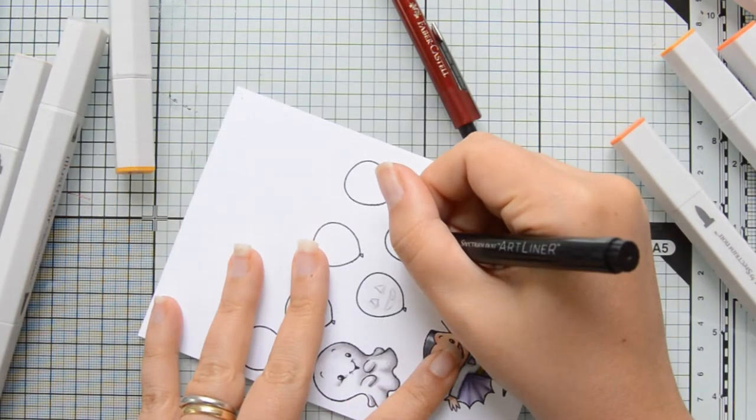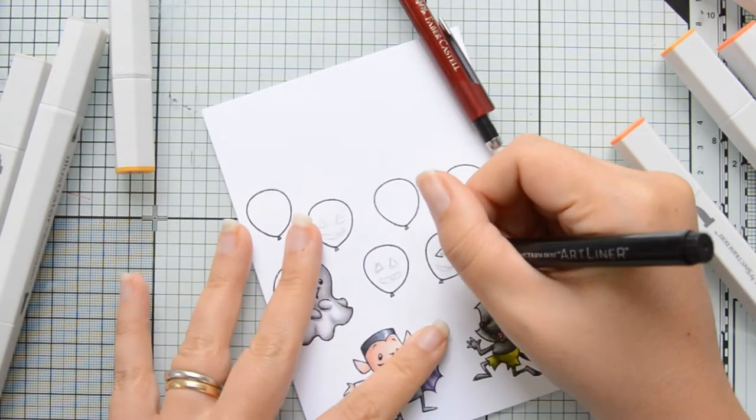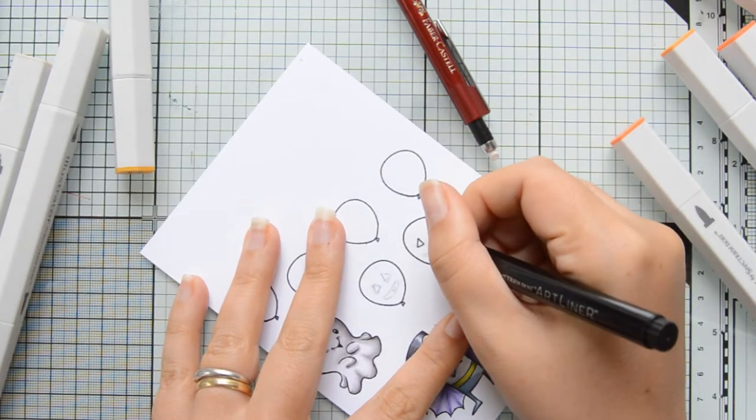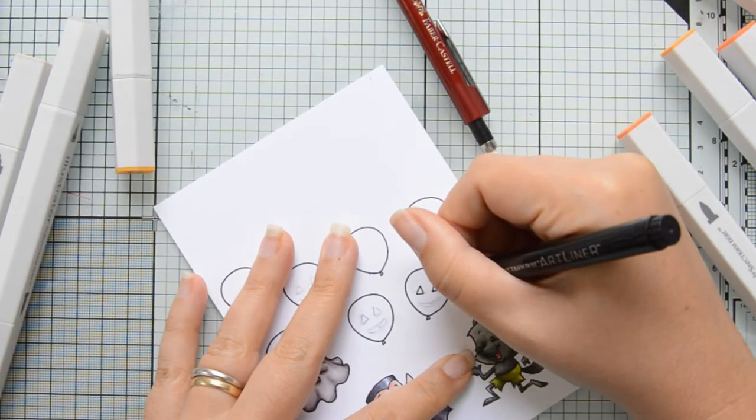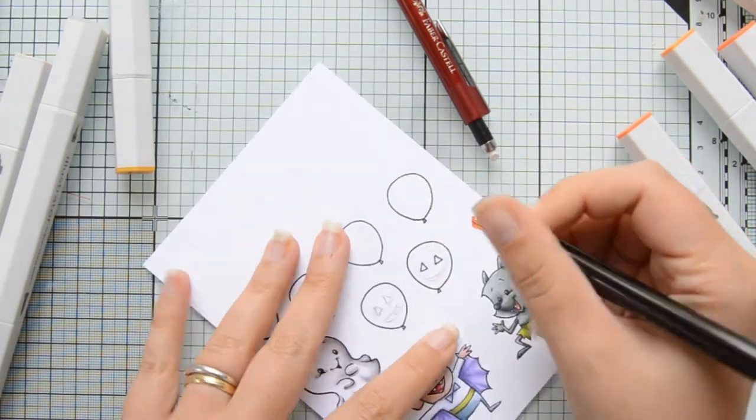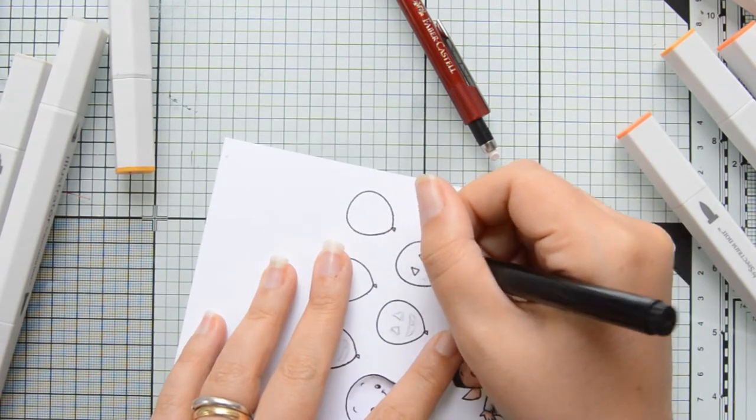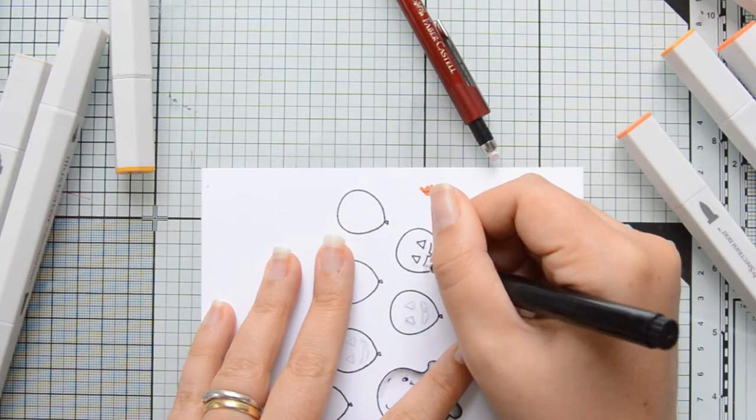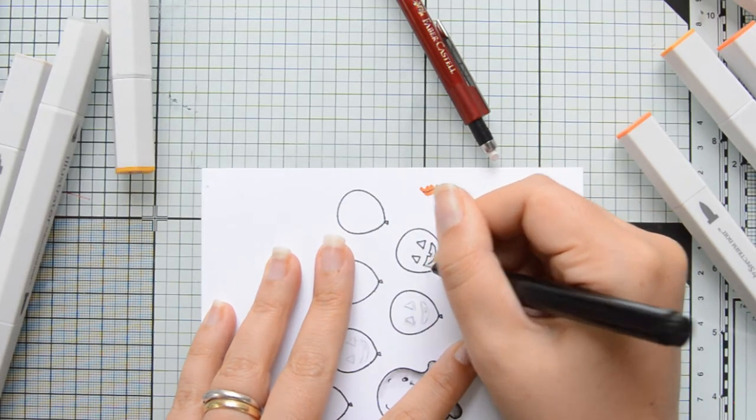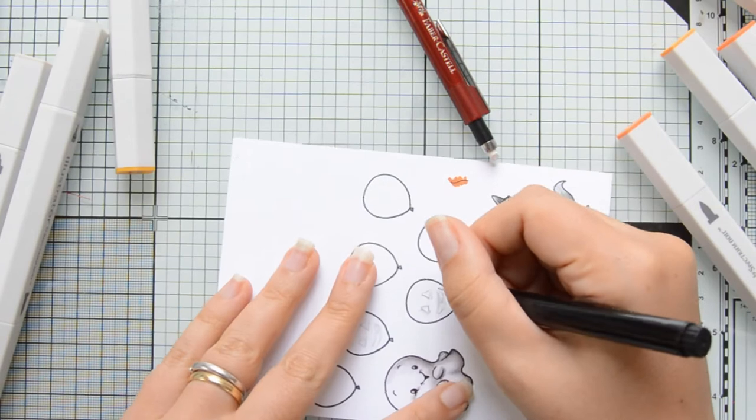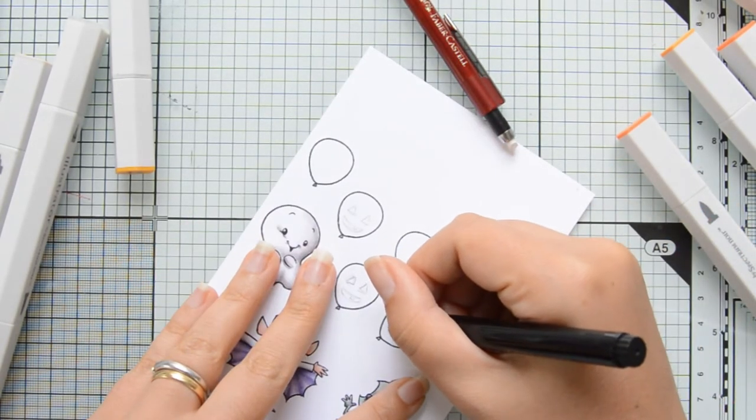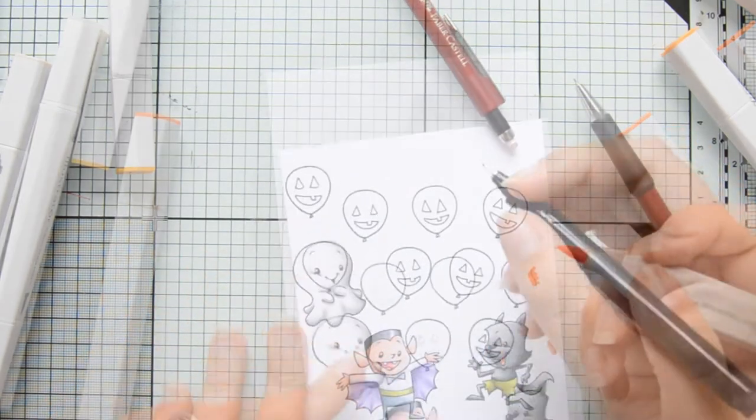I went in first with a pencil and then I outlined everything with a Spectrum Noir art liner. Make sure that whatever fine liner you use is safe with alcohol-based markers and won't smear when you actually go ahead and start coloring the images. As you can see, I tried on a side of this piece of paper. I drew in a line and then scribbled on top of it with my alcohol marker and it was fine.